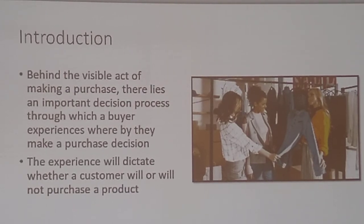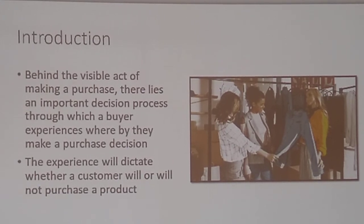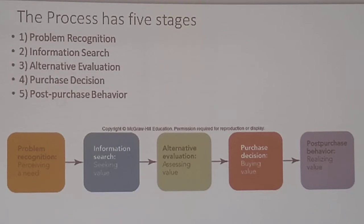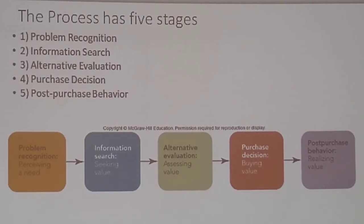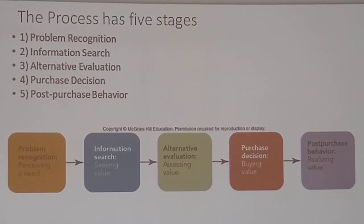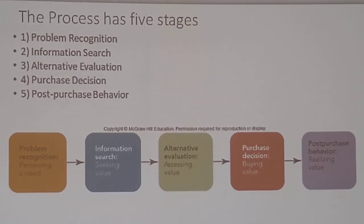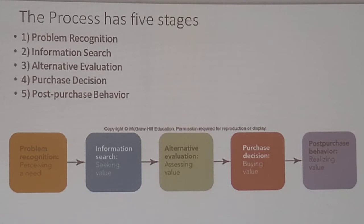Behind the visible act of making a purchase, there lies an important decision process through which a buyer experiences, whereby they make a purchase decision. The experience will dictate whether a customer will or will not purchase a product. There are five stages of that process — and this was one of your SurveyMonkey questions. What are the five stages a customer goes through when making a decision to purchase a product? Number one is problem recognition. Number two, information search. Three, alternative evaluation. Four, purchase decision. And five, post-purchase decision.